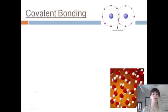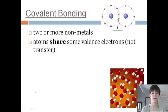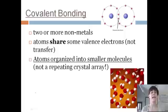So let's contrast this to covalent bonding and the properties of covalent compounds. So just a review of covalent bonding. We have two or more metals. They share valence electrons. They don't transfer them like ionic compounds. And instead of making a giant crystal array, they're just organized into smaller molecules. So in this picture, you can see all of these water molecules. They're not attached to each other. You just have independent water molecules.